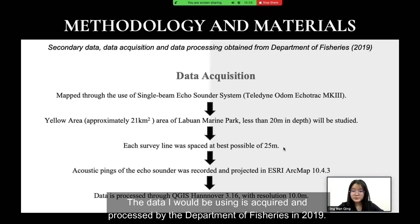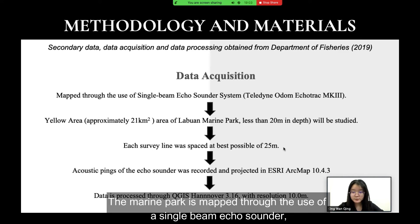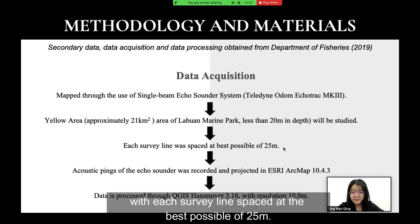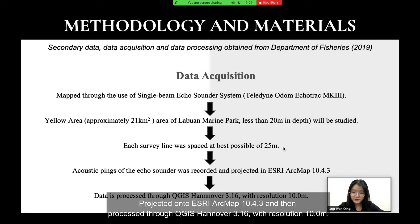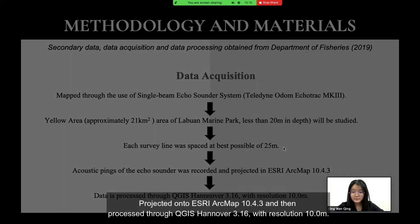The data used was acquired and processed by the Department of Fisheries in 2019. The marine park was mapped through the use of a single-beam echo sounder, with each survey line spaced at best possible 25 meters, projected onto ArcMap 10.4.3, and then processed through QGIS Hannover 3.16 with a resolution of 10 meters.